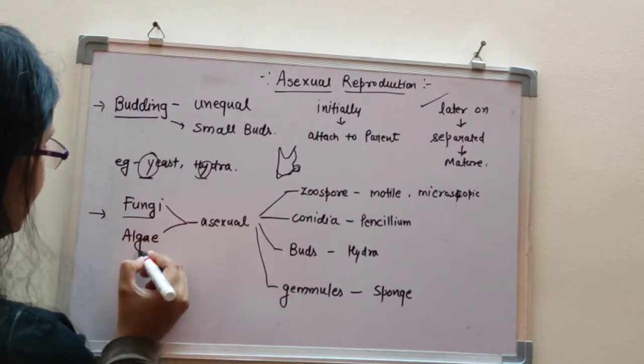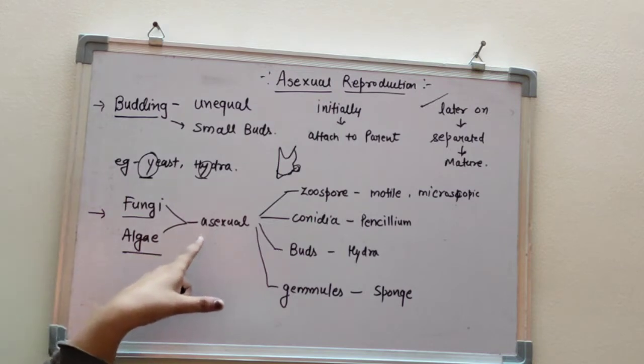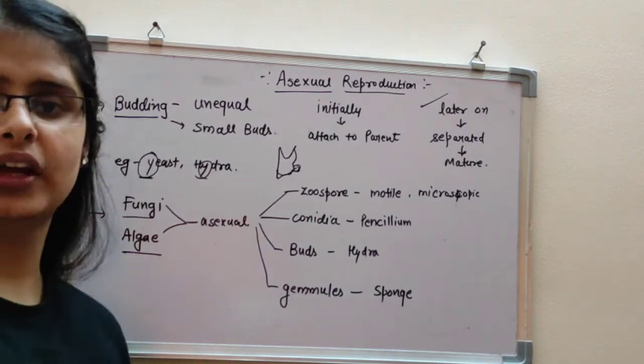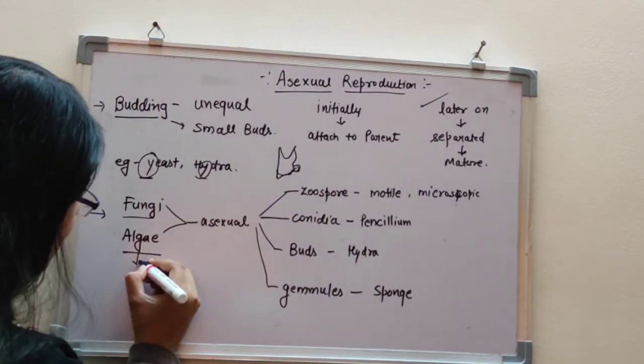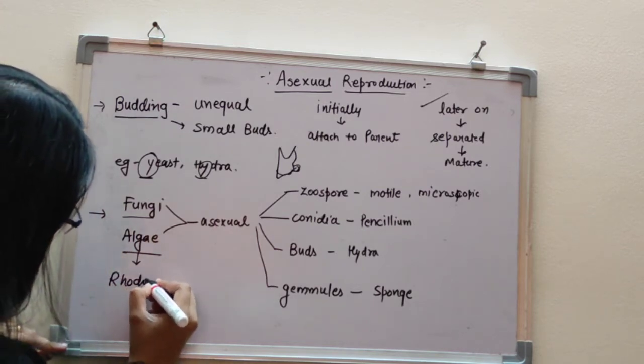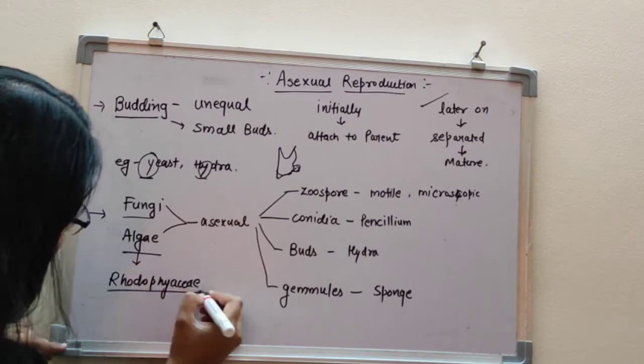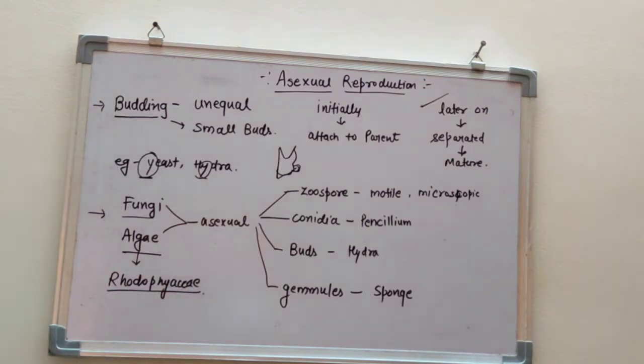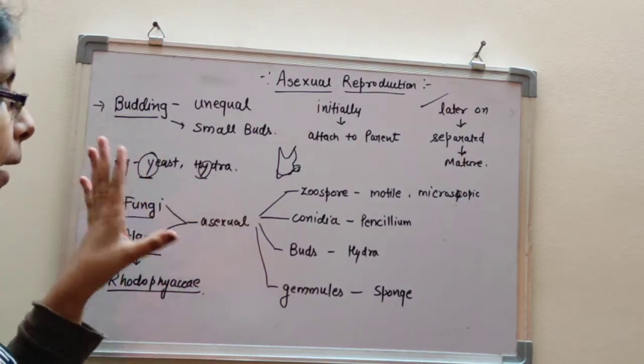Let's talk about fungi and algae. In fungi and algae, there is also asexual reproduction because they are not advanced enough to do sexual reproduction. When you read algae, there is a third type called Rhodophyta. In Rhodophyta, there is sexual reproduction. So in fungi and algae, there is asexual reproduction.